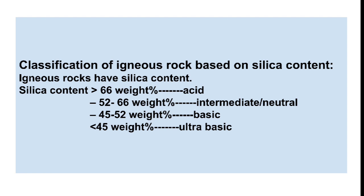Igneous rocks can also be classified based on silica content, present in the form of silicon dioxide. If silica content is greater than 66% by weight, it is classified as acidic. If between 52 and 66%, it is intermediate or neutral. If between 45 and 52%, it is basic. If less than 45%, it is ultra-basic.